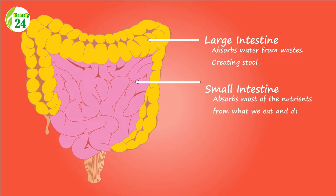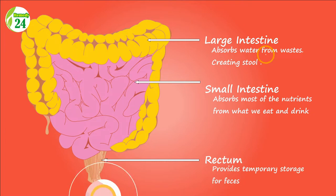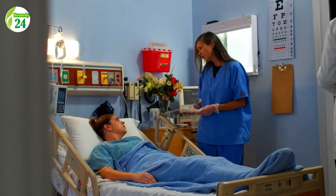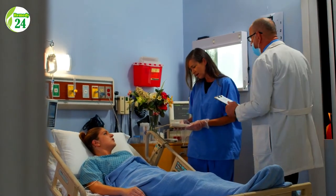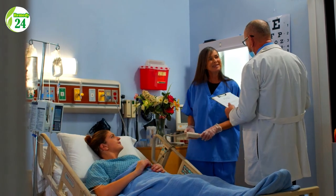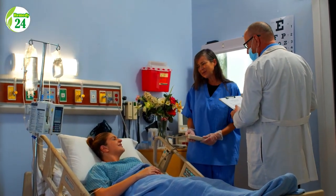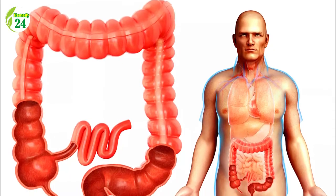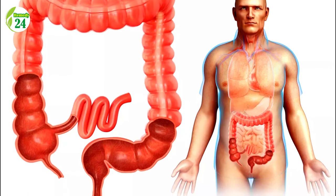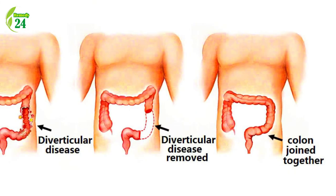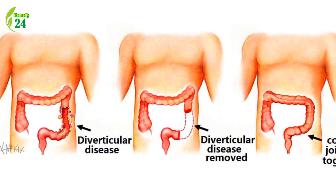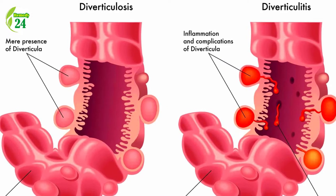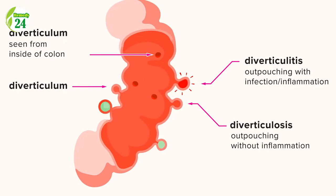Although diverticulitis can deteriorate into something more serious in a small percentage of instances, the milder kinds are usually easy to deal with. Our digestive tract is lined by specialized tissues that shield it from the caustic nature of digestive juices. Diverticulosis is a condition in which the walls of the digestive tract develop bulges known as diverticula. These pouches are most commonly found in the colon and usually cause no symptoms, though some persons may experience difficulties.